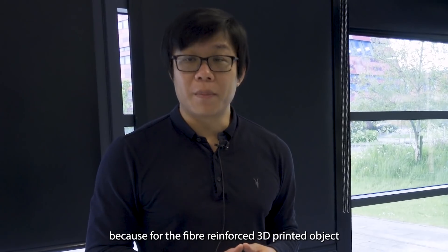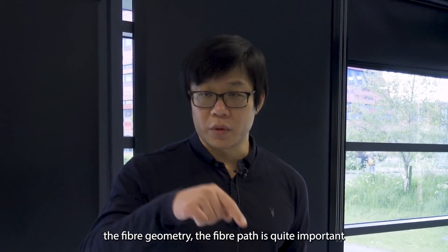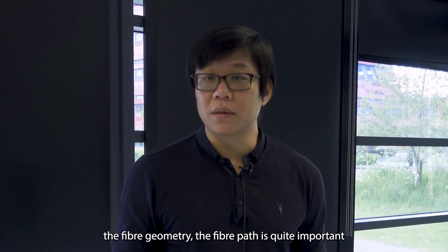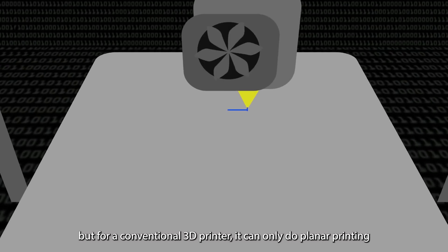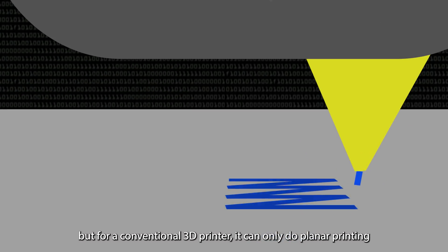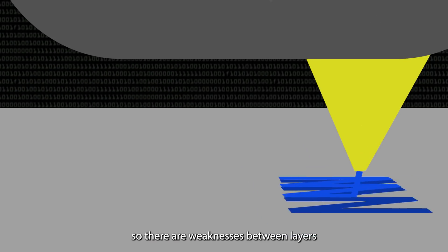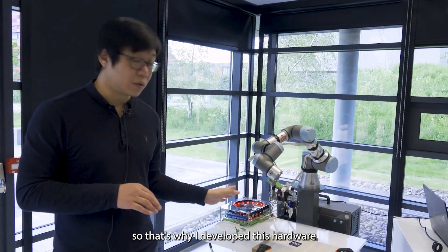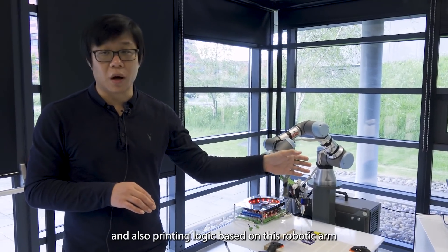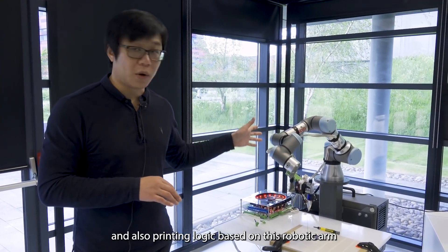Because for the fiber reinforced 3D printed object, the fiber geometry, the fiber path is quite important. But for conventional 3D printer, it only can do planar printing. So there are weaknesses between layers. That's why I developed this hardware and printing logic based on this robotic arm.